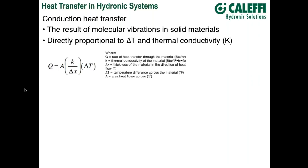That's true for conduction, convection, and radiation — you need a temperature difference to move thermal energy. The delta X in the equation is the thickness of the material. The thicker it is, the slower the rate of heat transfer. For example, an 8-inch-thick batt of fiberglass insulation versus a 4-inch-thick batt gives you twice the thickness and, in theory, half the heat transfer rate by conduction.